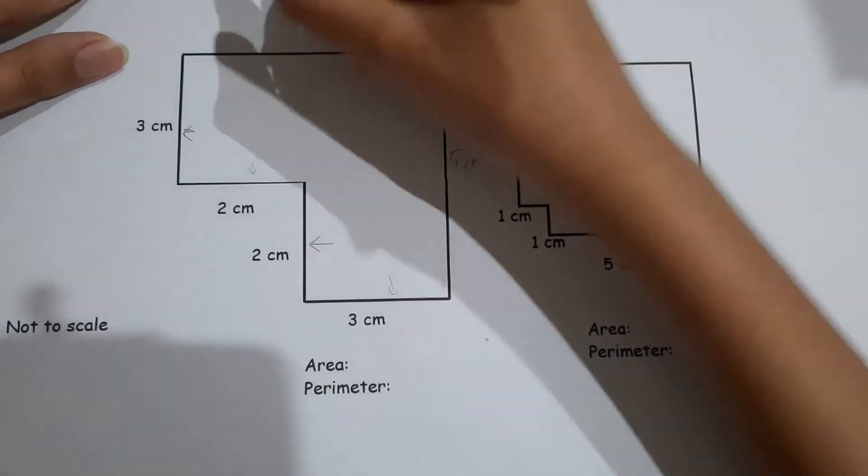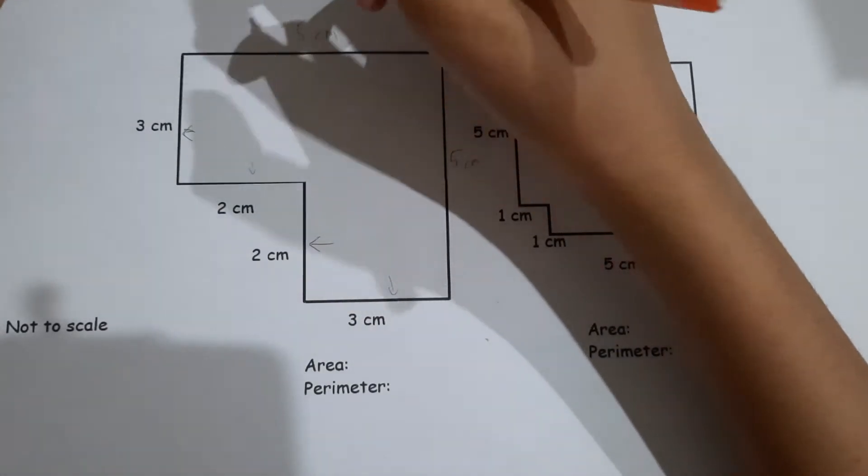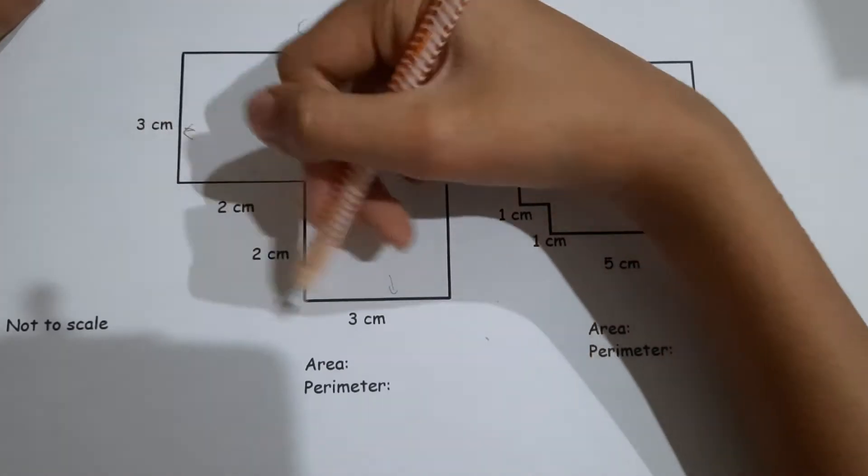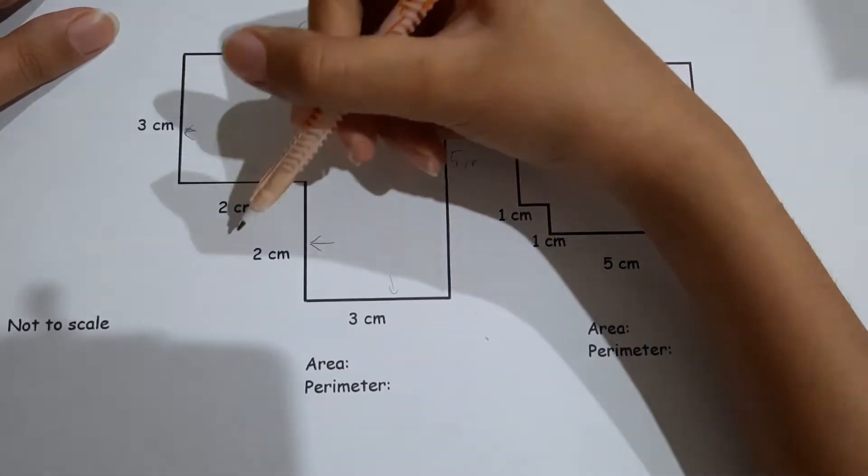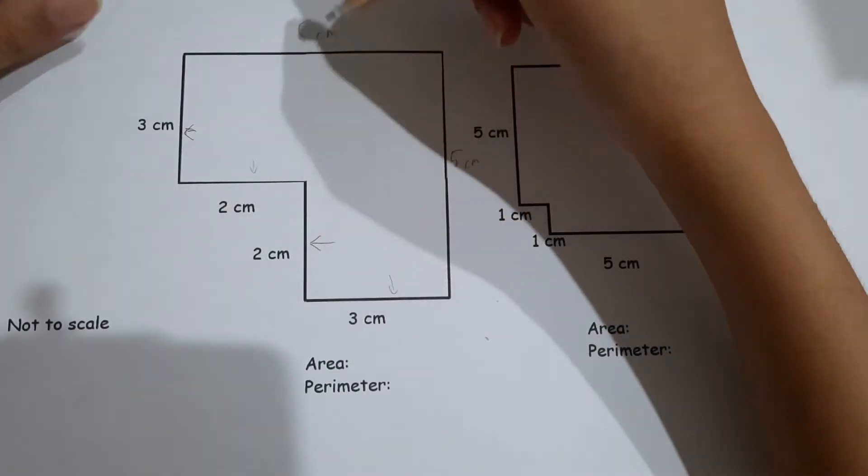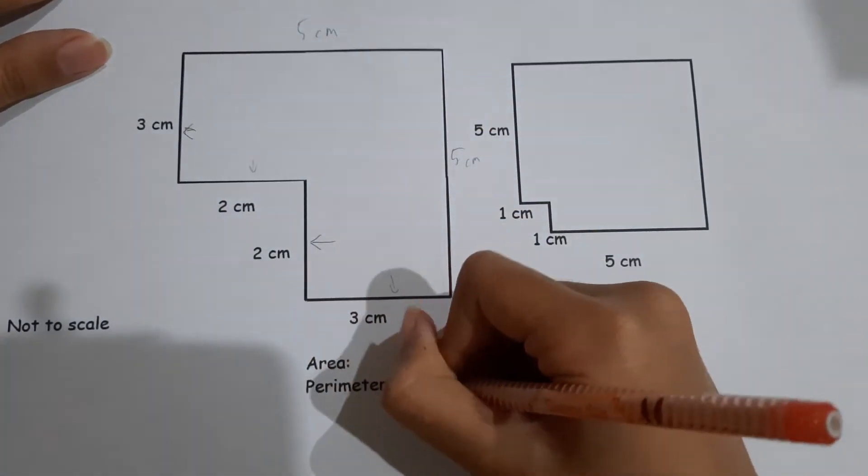It will be five centimeters. You still need to add these, so five plus five, ten, fifteen, twenty - that is your perimeter.